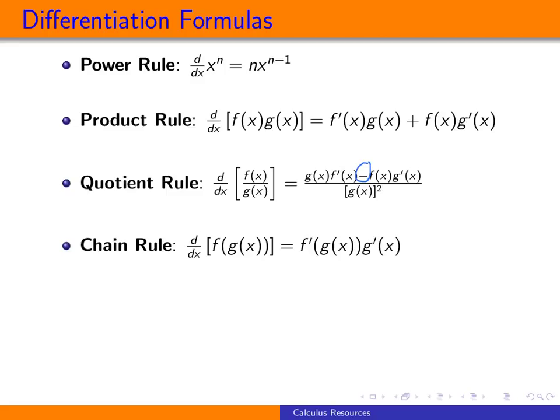The chain rule is used to differentiate a composition. That is when we see this inside function. So the derivative of this composition is the derivative of the outside, evaluated at the inside, multiplied by the derivative of the inside.